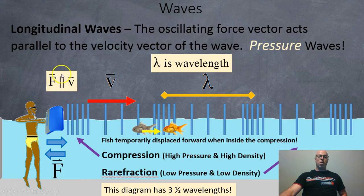So here the force is parallel to the velocity vector. And the wavelength would be from one compression to another compression, or from one rarefaction to another rarefaction. So when a compression occurs, there's high pressure and high density of the molecules. And when you have a rarefaction, like over here, the molecules are spread apart or stretched out. So you've got low pressure and low density.